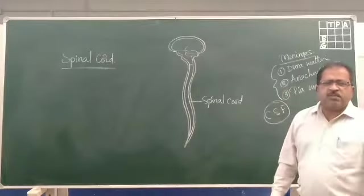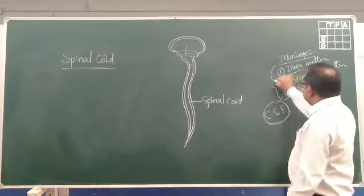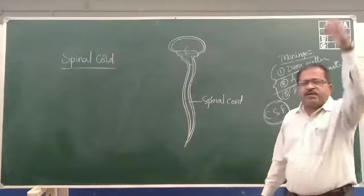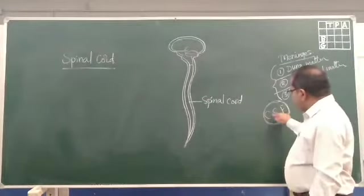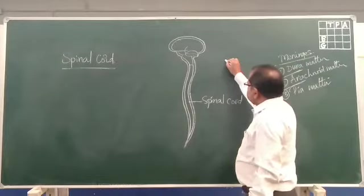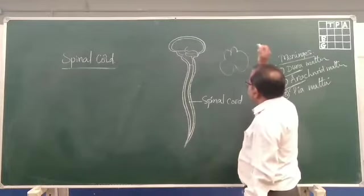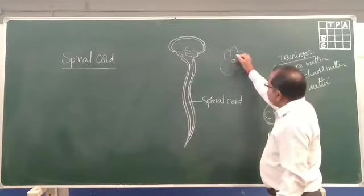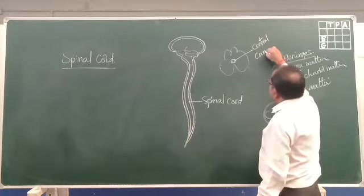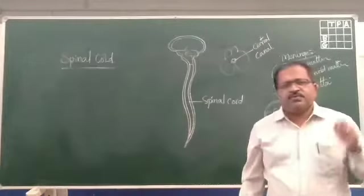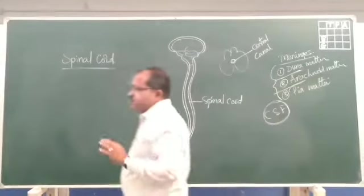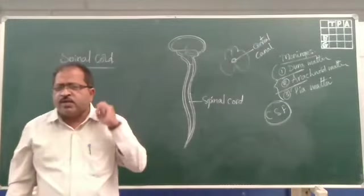Cerebrospinal fluid. This is the fluid which is flowing in between the layers, right from the brain to spinal cord and spinal cord to brain — it is traveling continuously. In addition to this, if you take the internal structure of the spinal cord, there is a small canal-like structure called the central canal. This central canal is also filled by CSF, cerebrospinal fluid, which protects the spinal cord from external injury. It is like a protective cushion for the spinal cord.